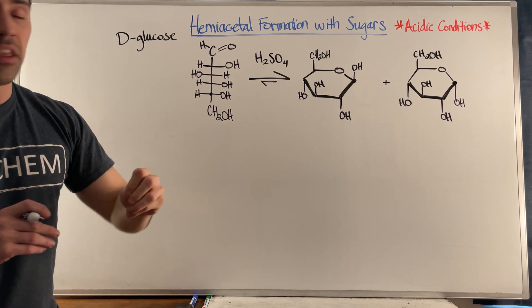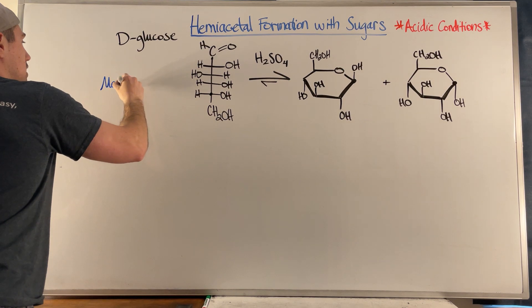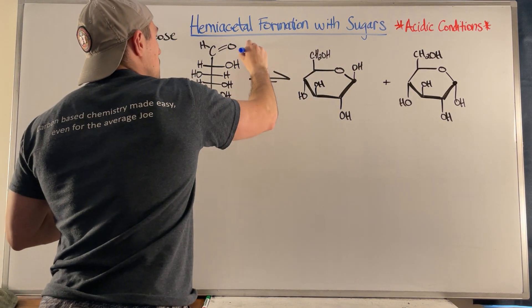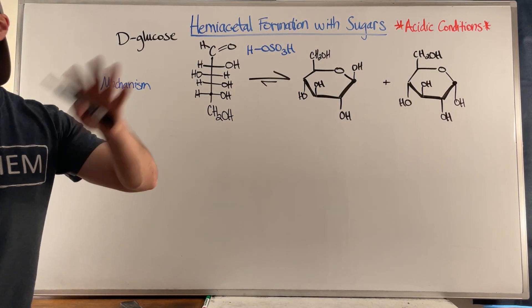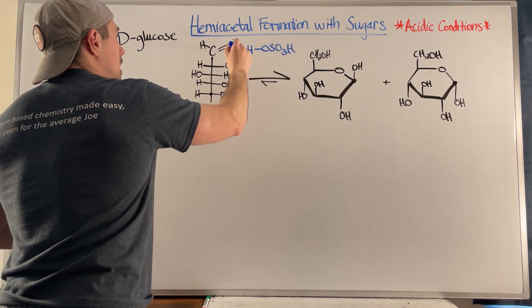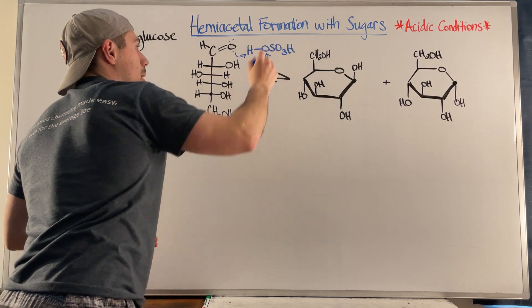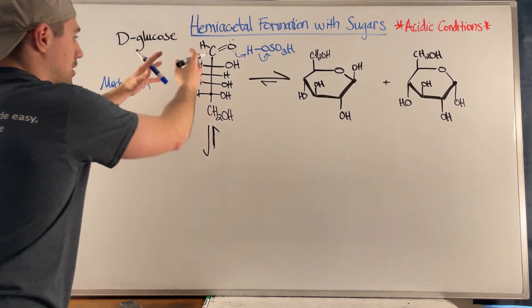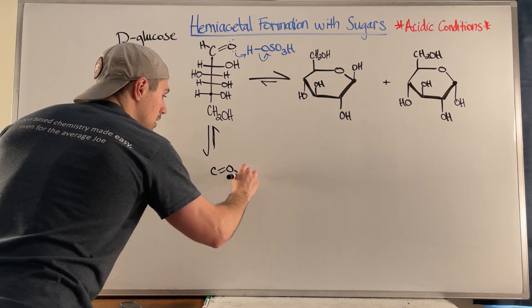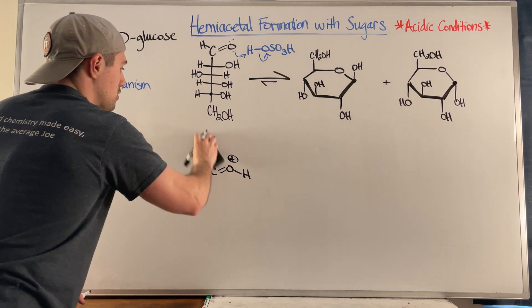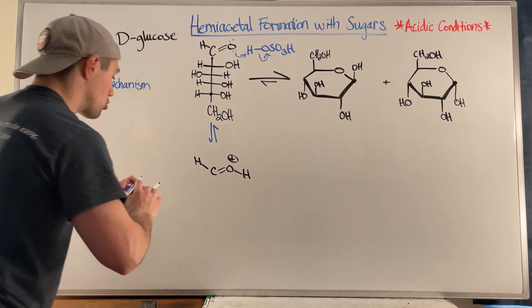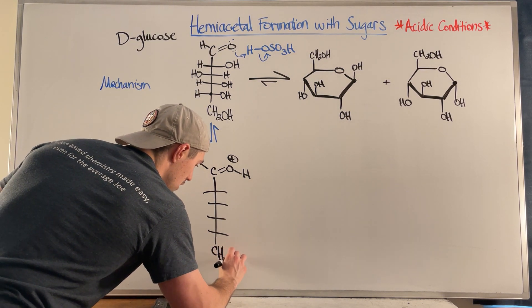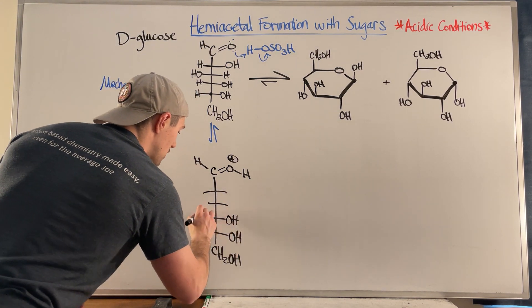For this video I just want to focus on hemiacetal formation. So mechanistically, drawing what this mechanism looks like: the very first step - I'm going to draw sulfuric acid, though it can be any generic acid - the very electronegative carbonyl oxygen is going to get protonated. That's the job of the acid. This happens in equilibrium. So what we have first is a carbonyl oxygen that now has a plus charge.